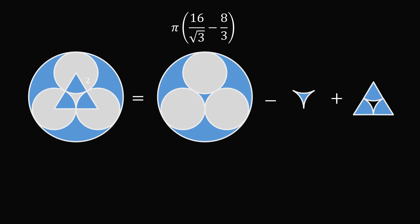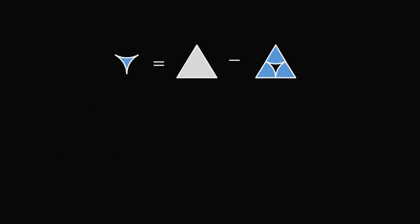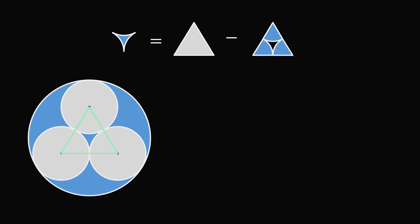Let's now calculate the area that's in between the three small circles. This will be equal to the area of the equilateral triangle formed between the centers of the three small circles, and then we need to subtract out the three areas of the circular sectors. We have an equilateral triangle formed between the centers of the three small circles. Since the radius of each small circle is equal to 2, the side of the equilateral triangle will be equal to 2 plus 2, which is equal to 4. The area of an equilateral triangle is equal to s squared multiplied by the square root of 3 over 4, giving an area equal to 4 times the square root of 3.